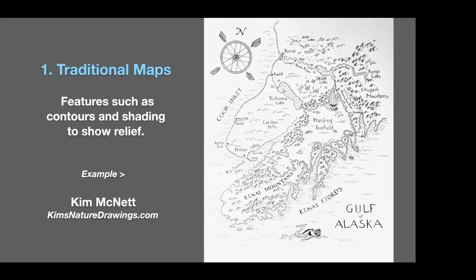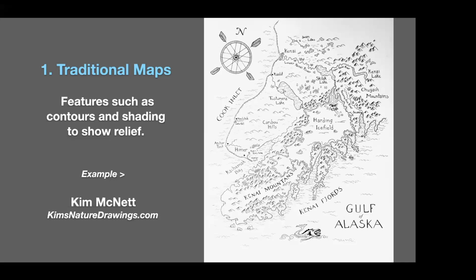The first type we'll look at are traditional maps, where you add feature contours — features like mountains, trees, drawing relief, et cetera. There are lots of different ways to do it. Another fun way is strip maps or itinerary maps — a very old style. Then there are picture highlight maps, which are more illustrative, depicting a place or region with lots of pictures instead of topography. Finally, behavior and data maps — not just always place, but mapping behavior, birdsong, or flower blooms.